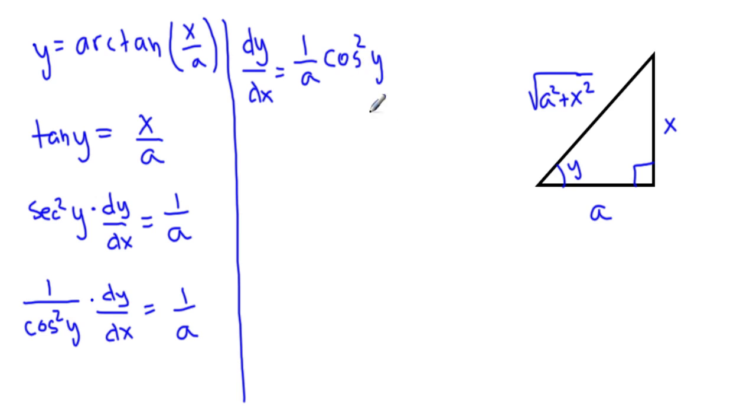What's cosine of y? Cosine of y, here's our angle, is a divided by root a squared plus x squared. So now we have dy over dx equals 1 over a cosine squared, which is adjacent divided by hypotenuse.